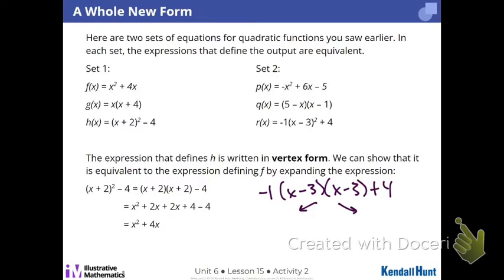You could either distribute the negative 1 to x minus 3 and then go from there, or you could keep the negative 1 and then distribute it after you've multiplied your binomials. It doesn't matter which one of those you do. It's like you've got to multiply three things. You can multiply those three things in any order you want.